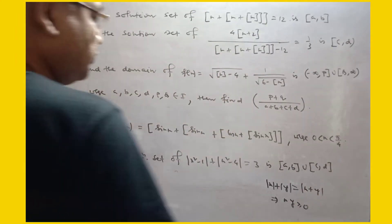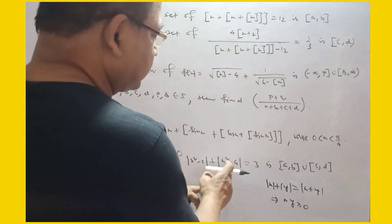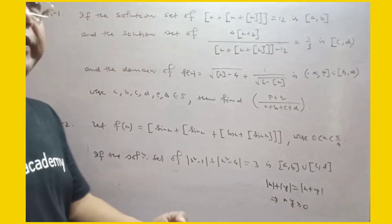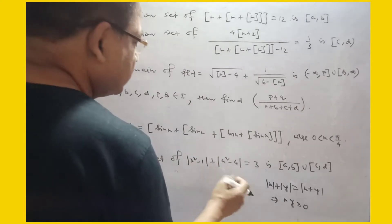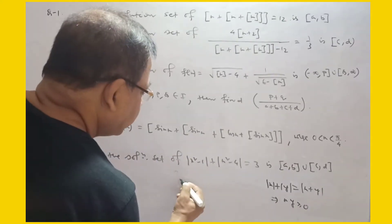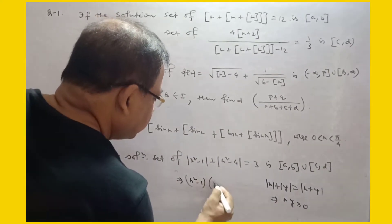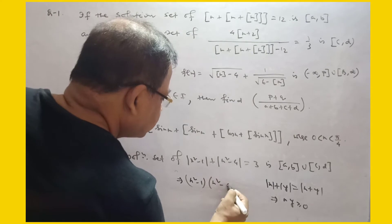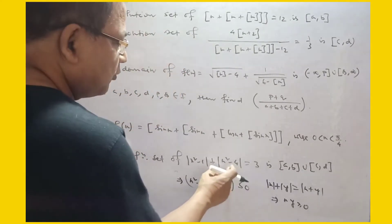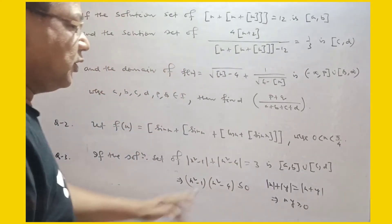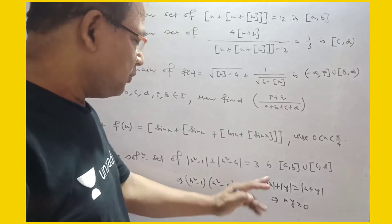X and Y are greater than or equal to 0. The modulus of X and the modulus of minus X is the same. So you will get the relation: X² − 1 and X² − 4 is less than or equal to 0. That means 4 minus X² is greater than or equal to 0.